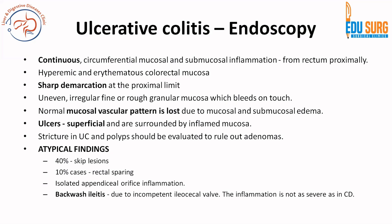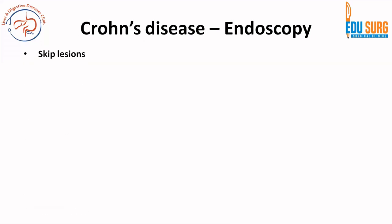Atypical findings in ulcerative colitis: 40% of UC cases can have skip lesions, while 10% of cases have rectal sparing — important to remember. The 40% with skip lesions can mimic Crohn's disease, and the 10% with rectal sparing can lead to diagnostic dilemmas. There can be isolated appendiceal orifice inflammation. Backwash ileitis is usually due to an incompetent ileocecal valve, and even in such cases, the inflammation is not as severe as Crohn's disease and is not transmural — that is what helps differentiate between UC and Crohn's.